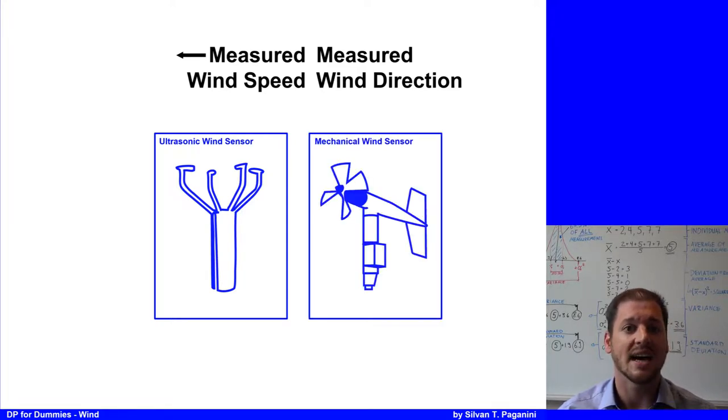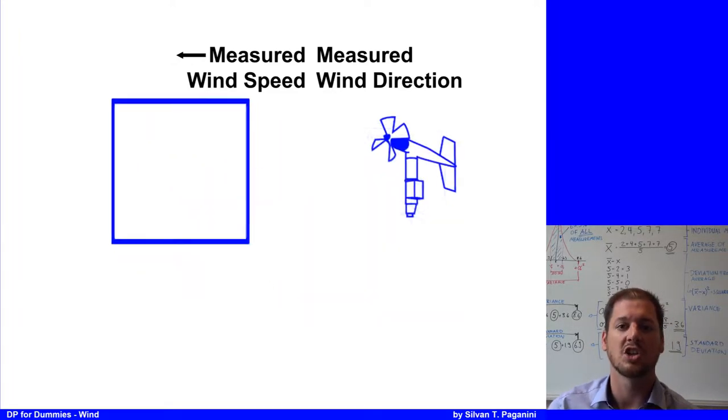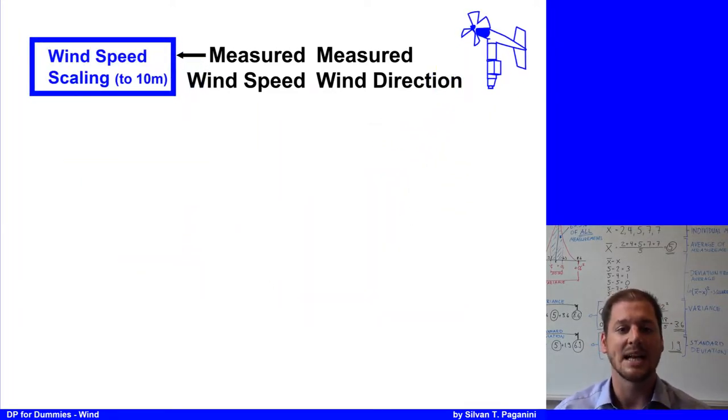Both are designed to be used within the hardest environmental conditions. The measured wind speeds need to be scaled to a common level, normally 10 meters above sea level. This is because wind speed increases with height from the surface.